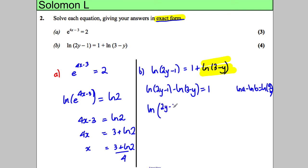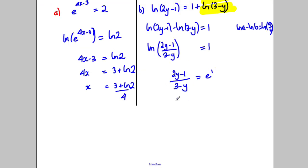Now I can take exponentials of both sides. So taking exponents I would get 2y subtract 1 over 3 subtract y is equal to e to the power of 1, which is just e. And now I want to make y the subject, so multiply both sides by 3 subtract y.